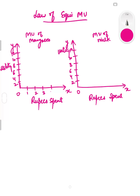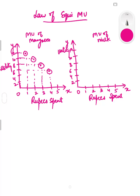The rupees spent are 1, 2, 3, 4, and 5 on both axes. Now let's plot the marginal utility of mangoes. When the first rupee is spent we get 12 utils, the second rupee gives 10, the third rupee gives 8, the fourth rupee gives 6, and the fifth rupee gives 4 utils. This gives us the marginal utility curve for mangoes.